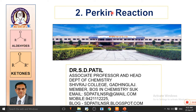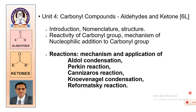In this lecture, we are going to deal with the second name reaction, which is the Perkin reaction. This is unit number 4 of Chemistry of Carbonyl Compounds. We have covered introduction, nomenclature, structure, reactivity of the carbonyl group, and mechanism of nucleophilic addition. The mechanisms we are expected to learn are Aldol, Perkin, Cannizzaro, Knoevenagel, and Reformatsky. Out of these, Aldol we have already finished.